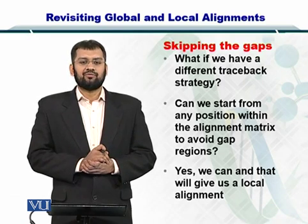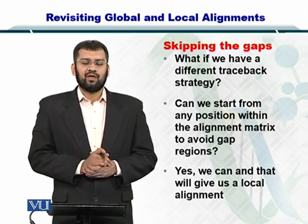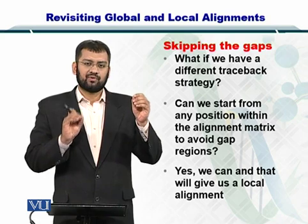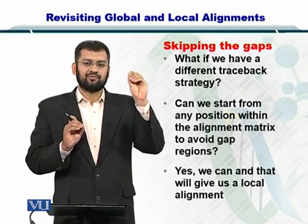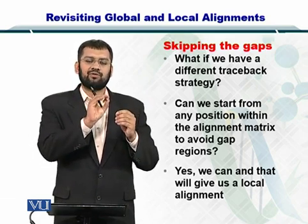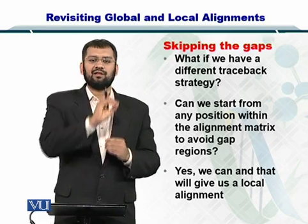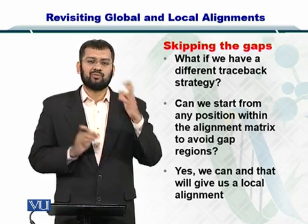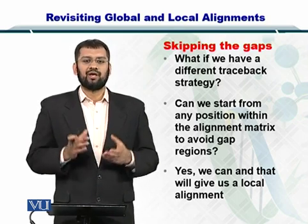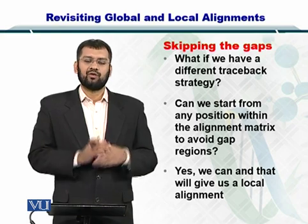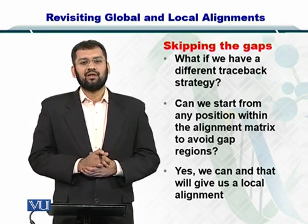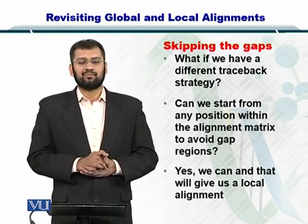What if we have a different traceback strategy? In the Needleman-Wunsch traceback strategy, we use the bottom right and connect it to the top left. What if we can start the alignment from some arbitrary position within the matrix and then try to connect small portions within the alignment? Such a situation will help us create a local alignment. So Needleman-Wunsch alignment gives a global alignment, and local alignment is obtained by having a different traceback strategy.